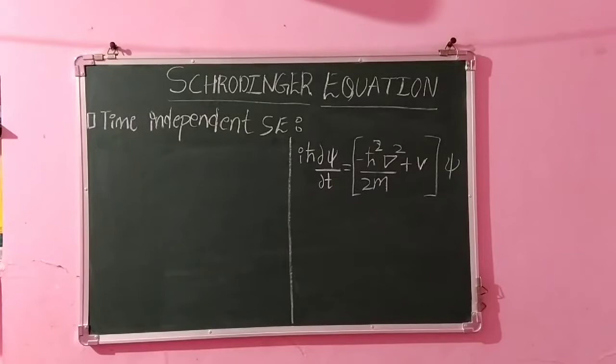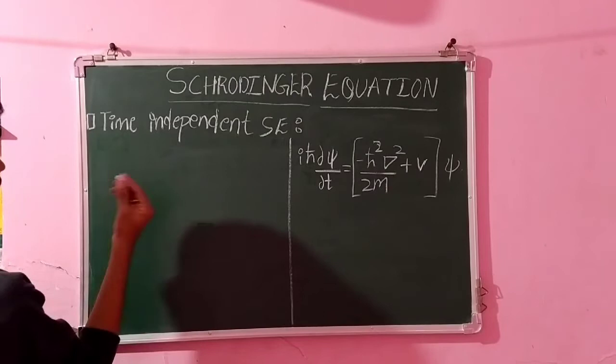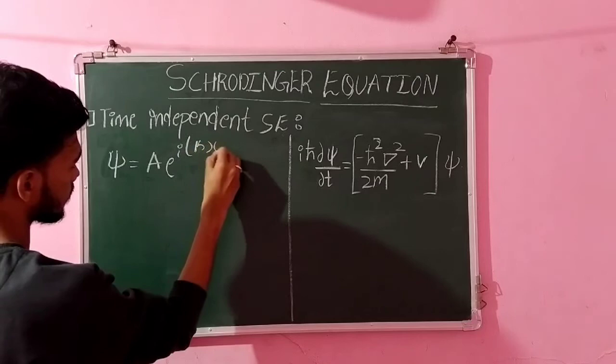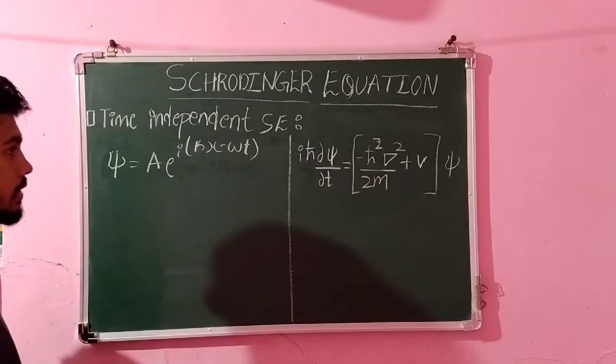So now let's get time-independent Schrödinger wave equation. First for that, consider wave equation. Psi equals A into some amplitude e raised to i. It represents the space region and this represents the time region. So just differentiate.